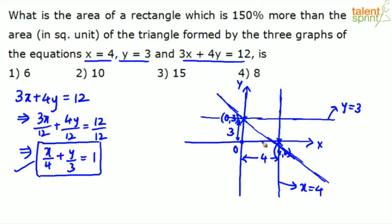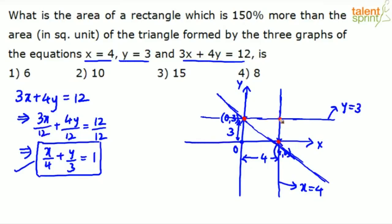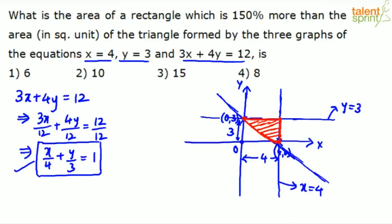So this is the triangle. If you observe the triangle, the vertices will be: the first vertex where x=4 and y=3 meet is (4, 3); the second is (0, 3); and the third is (4, 0). So the three vertices are (0, 3), (4, 0), and (4, 3). The triangle is made up of the segment from x=4, the segment from y=3, and the third line.